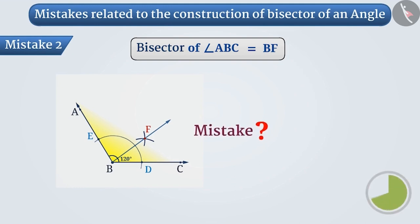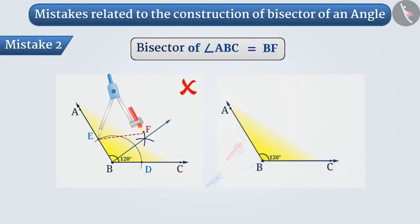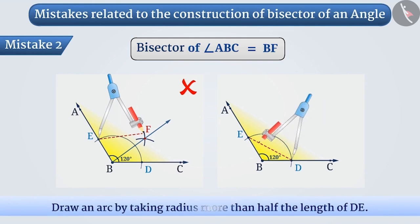Think for a while. You are absolutely right. It is wrong to change the measurement of the compass here. Keep in mind, when you make an arc cutting the arms of the angle, then take more than half the distance of D in the compass. This will allow you to draw arcs cutting each other from both intersection points.